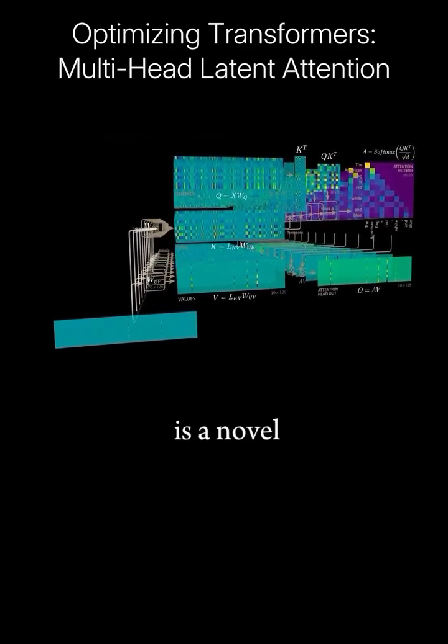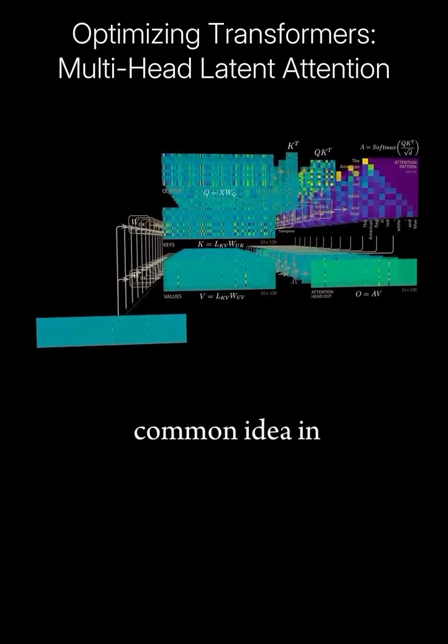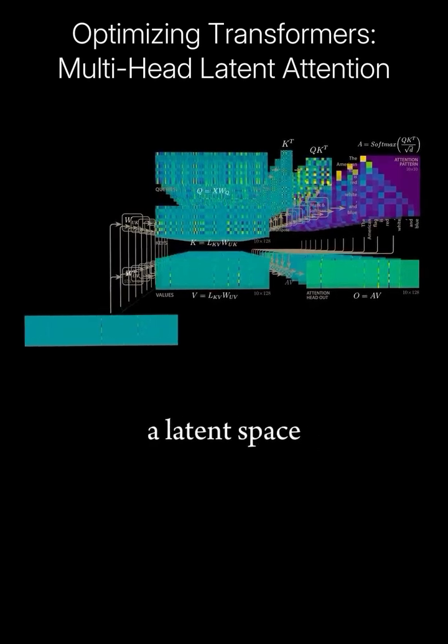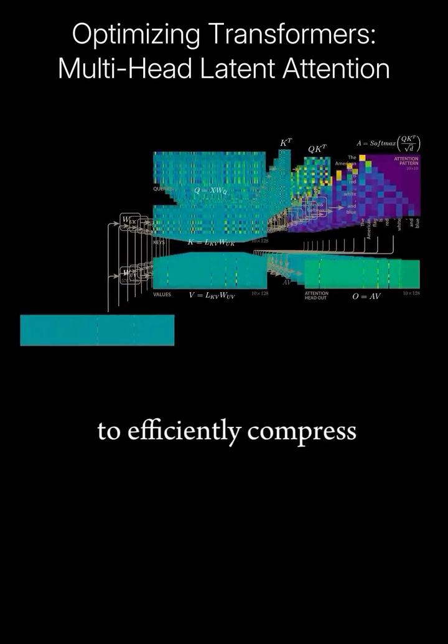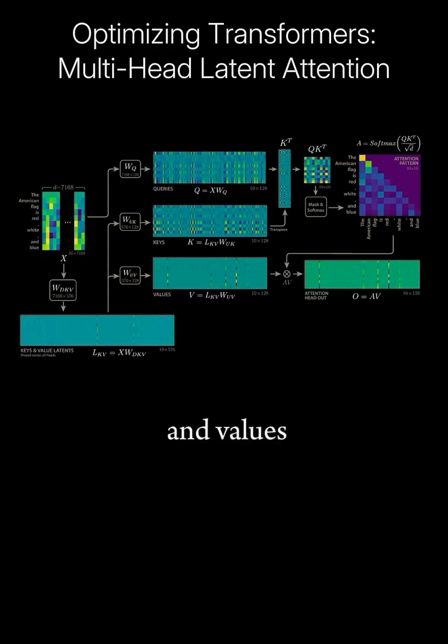The key insight is a novel application of a very common idea in machine learning, a latent space. What if the model could learn to efficiently compress its own keys and values?